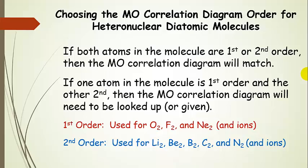And so just a reminder, we use first order for oxygen, fluorine, and neon, second order for lithium, beryllium, boron, carbon, and nitrogen. And then, of course, all of their associated ions.